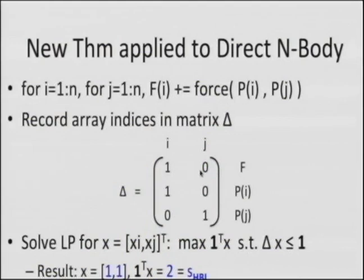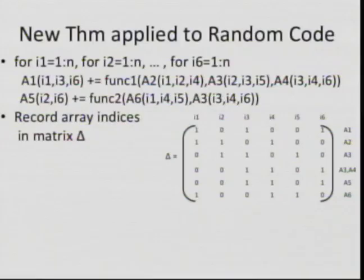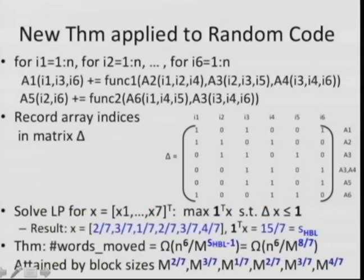Applying the theorem to random code: six nested loops with indices I1 through I6 and random subscripts. Everything I need to know is encoded in a 6×6 matrix — six columns for loop indices, six rows for arrays. Solving the six-by-six linear program produces a set of numbers summing to 15/7 — that's S_HBL. The theorem says no matter how you reorganize this code, you can't move fewer than n^6 / M^(15/7 − 1) words, attained by block sizes given by the dual solution.